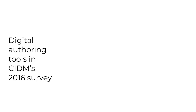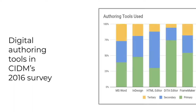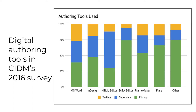In 2016, the CIDM — that's Center for Information Development Management — surveyed tech comm professionals and asked them directly what digital authoring tools they were using. This graph shows the primary tools in green, secondary ones in blue, tertiary ones in yellow. A DITA XML editor was the most used primary tool, followed closely by other and then MadCap Flare. The most common secondary tool was an HTML editor.